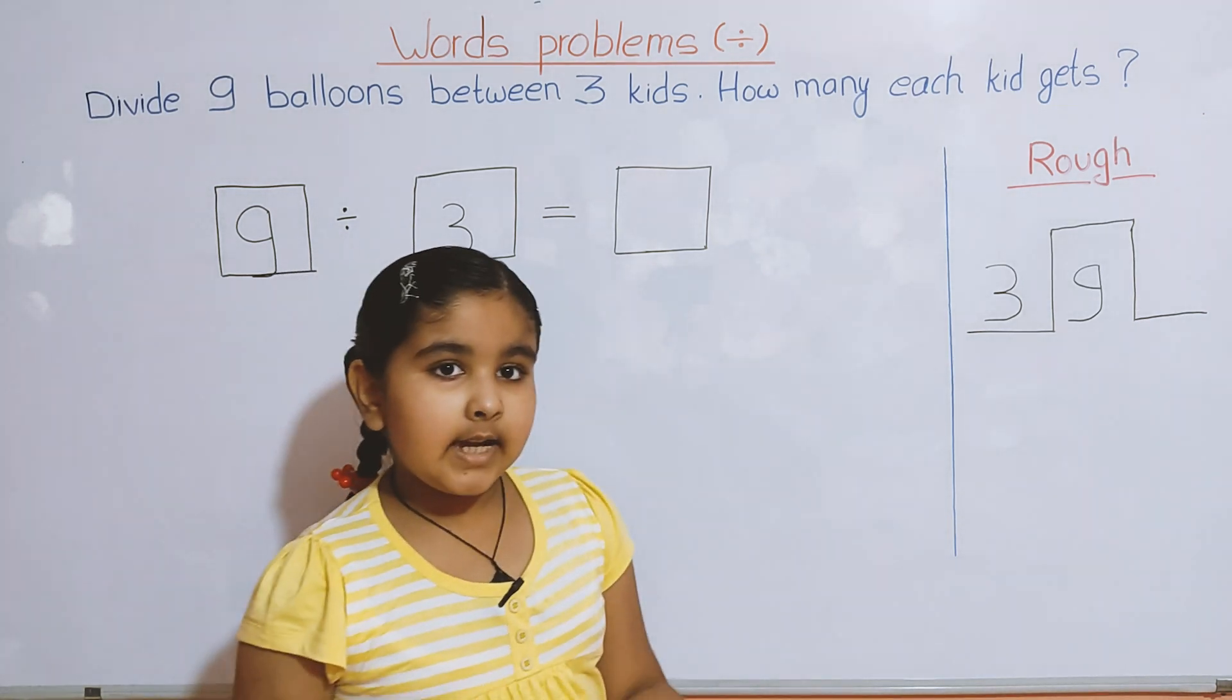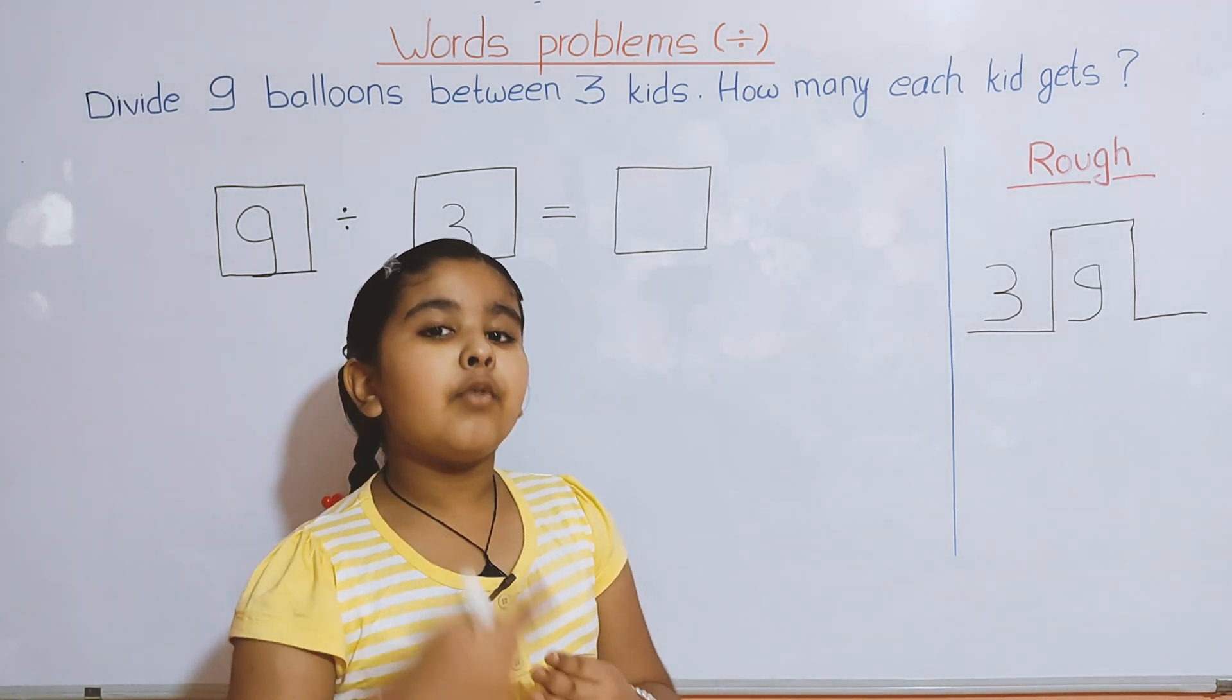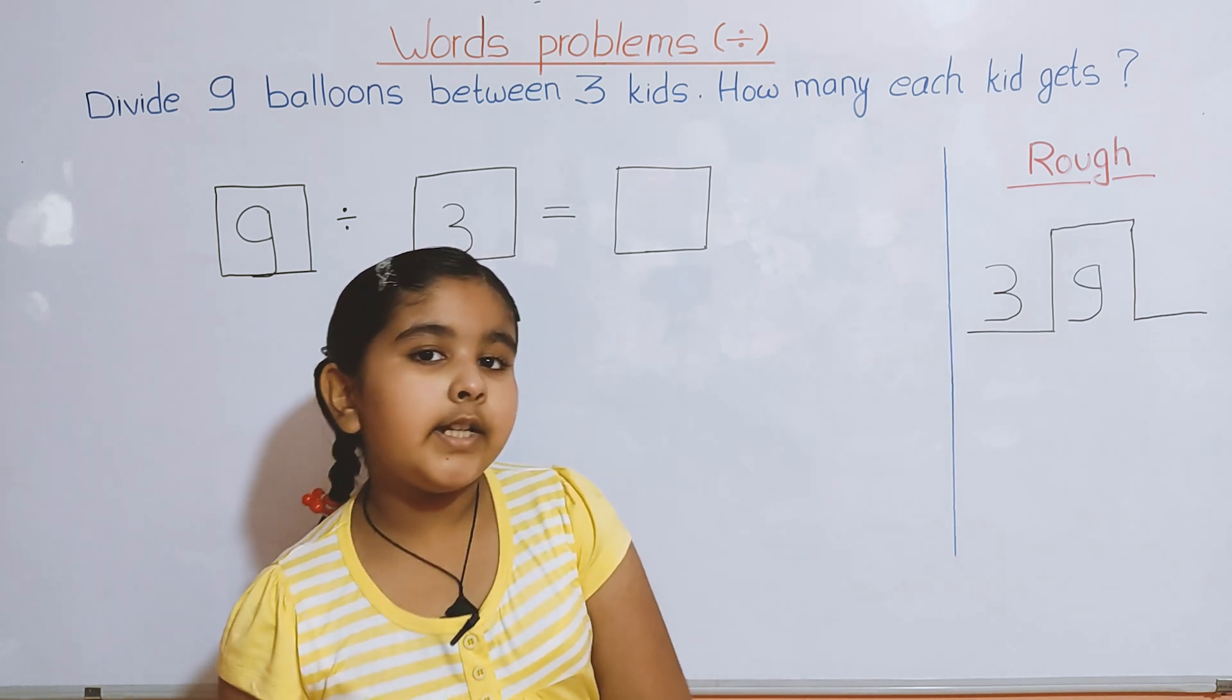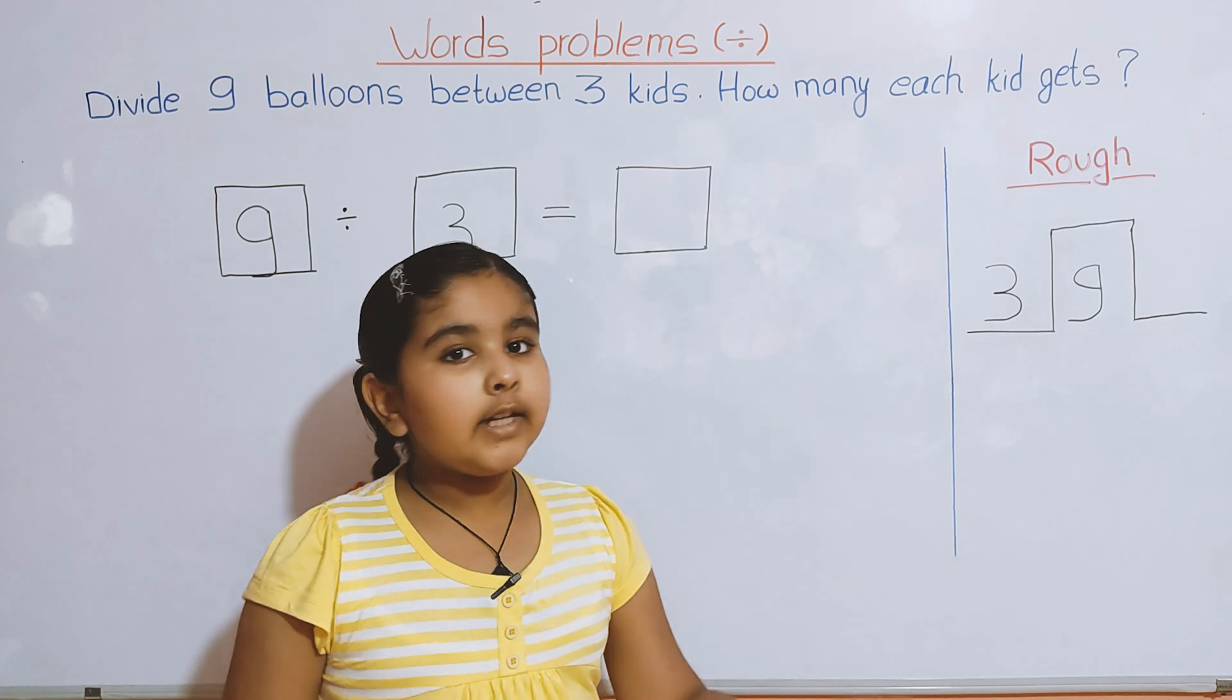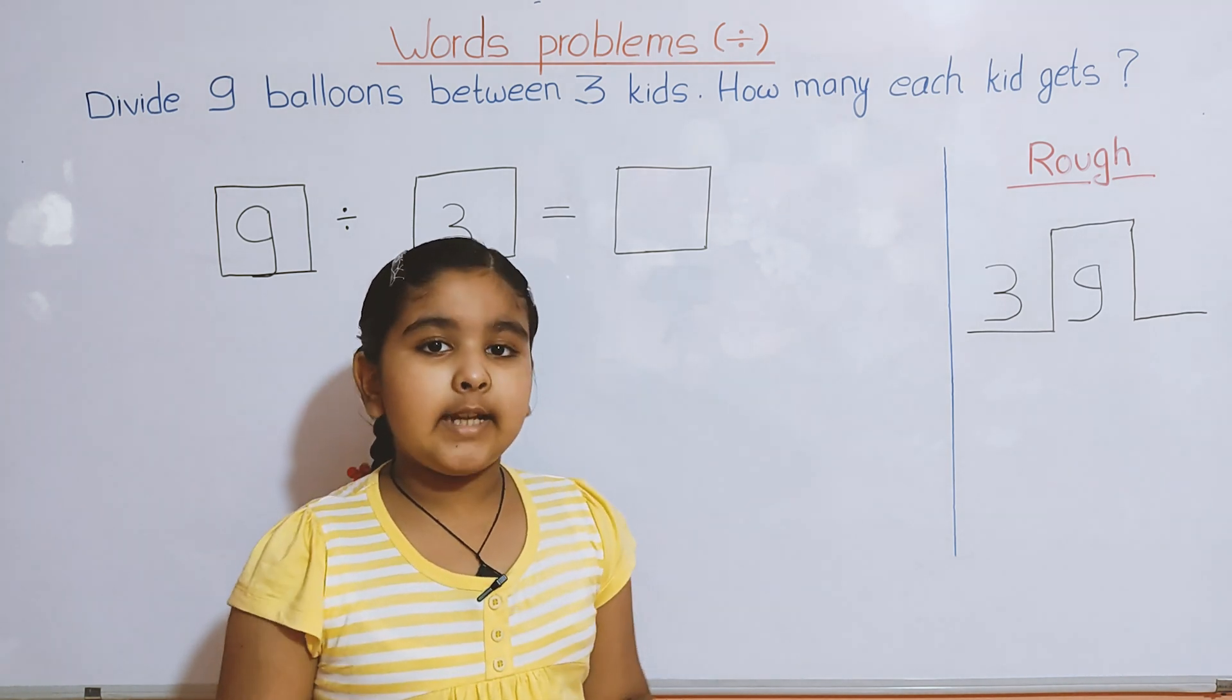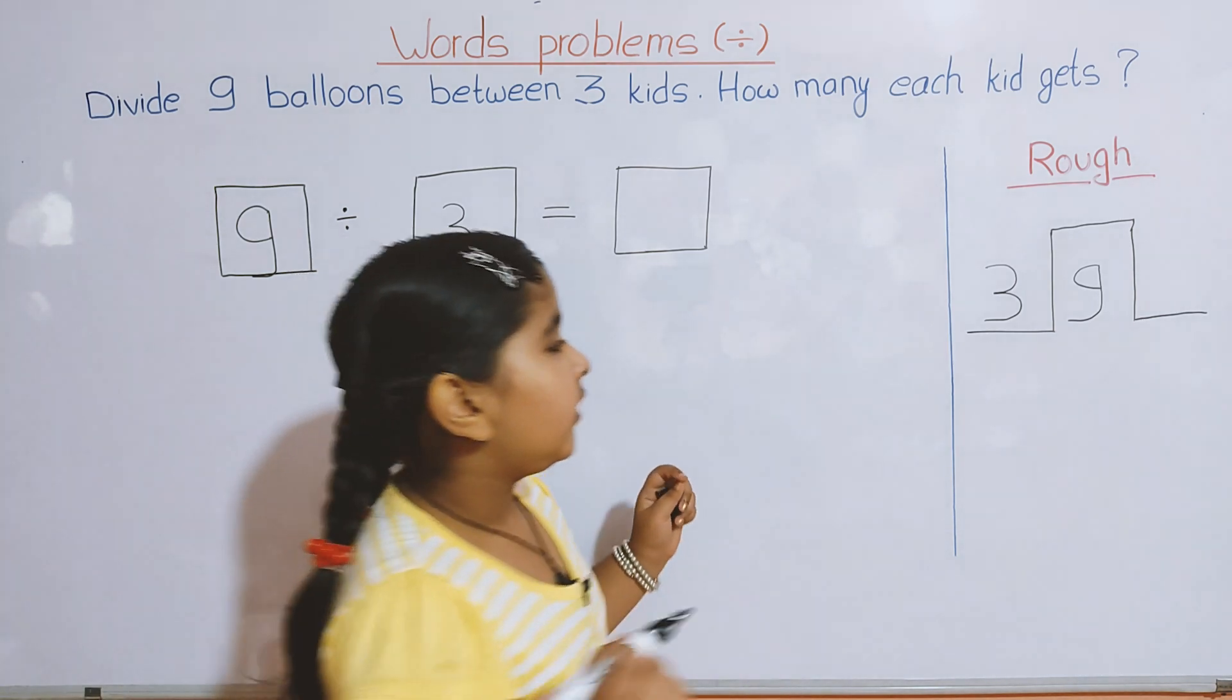So 3 times what will be 9? We have to find that out. Let's start. 3 ones are 3. 3 twos are 6. 3 threes are 9. After counting 3 times, we get 9. Three threes are 9.